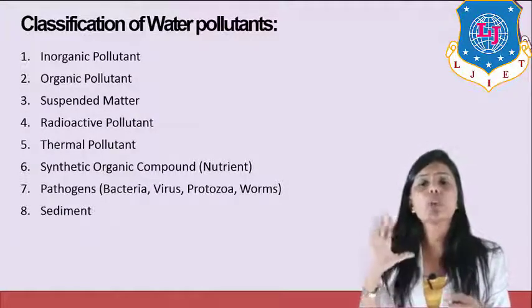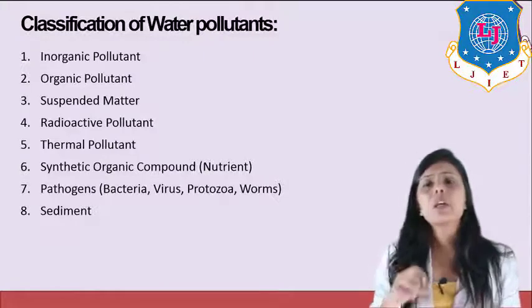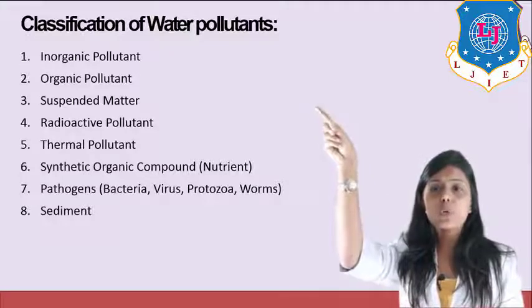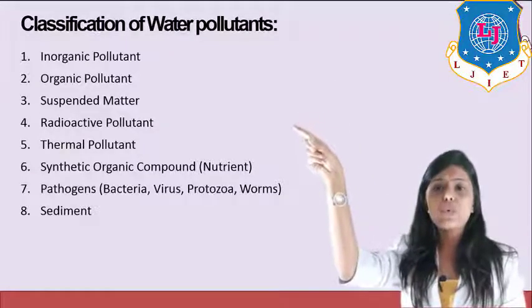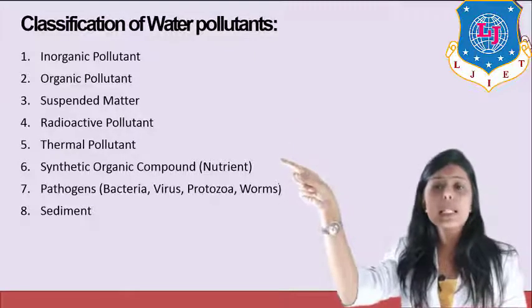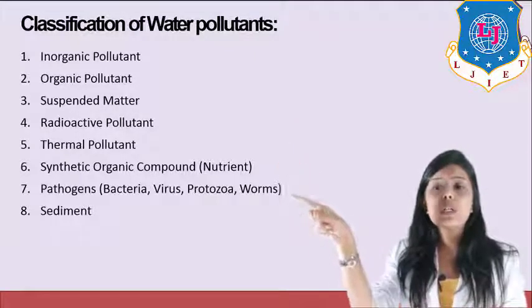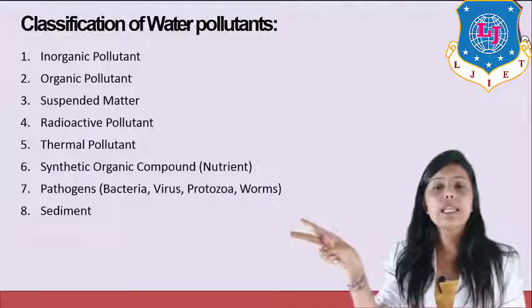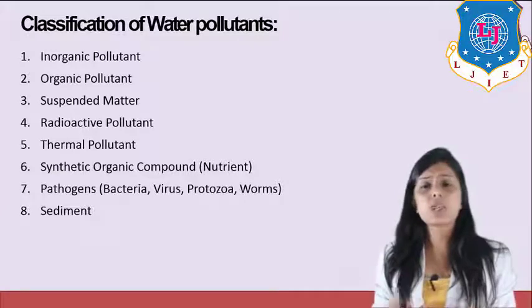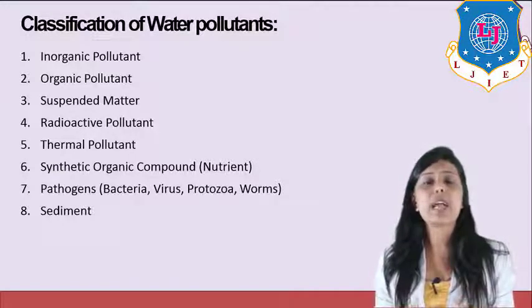Now, the classification of water pollutants. Water pollutants are classified into eight categories: first, inorganic water pollutants; second, organic water pollutants; third, suspended matter; fourth, radioactive pollutants; fifth, thermal pollutants; sixth, synthetic organic compounds; seventh, pathogens; and eighth, sediments. Pathogens are harmful microorganisms — bacteria and viruses present in water — that are harmful to the human body.